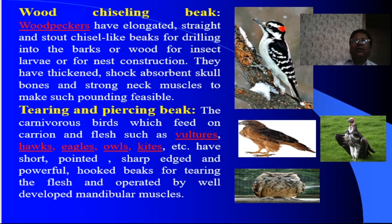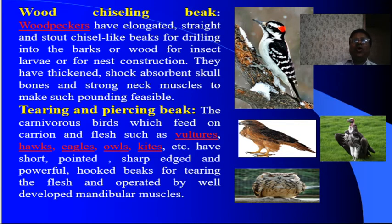Wood chiseling beak — the woodpecker is an example of this type. In this bird, they have an elongated, straight and stout chisel-like beak for drilling into bark or wood for insect larvae or for nest construction. They have thickened, shock-absorbent skull bones and strong neck muscles to make such pounding feasible.